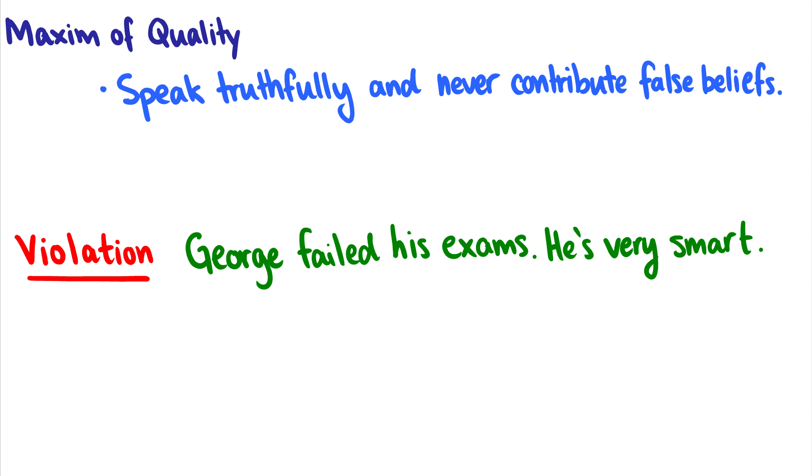The first maxim, and you'll see very quickly that we don't always hold true to these maxims, would be the maxim of quality. So the maxim of quality says we should speak truthfully and never contribute false beliefs. So for instance, if I want to talk about how far away the moon is from the earth, I would not give a number if I'm not 100% sure about it and have evidence.